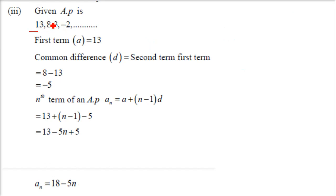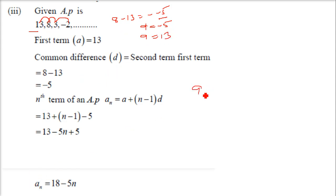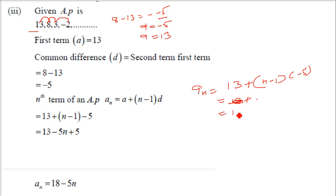Here we have A as 13 and D as 8 minus 13, that is minus 5. You can verify with any consecutive pair: the common difference D is minus 5. Now to find the nth term, A_n equals A plus N minus 1 into D, which is 13 plus N minus 1 into minus 5. Expanding: 13 plus 5 minus 5N gives 18 minus 5N. So the nth term is 18 minus 5N.